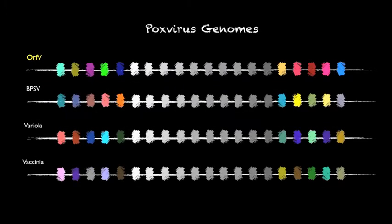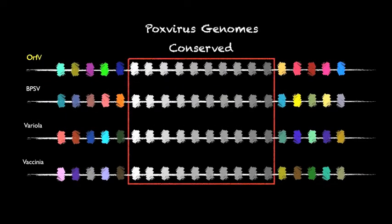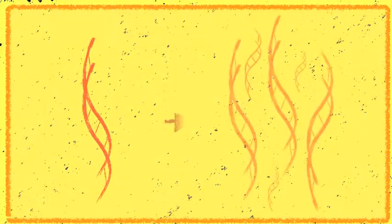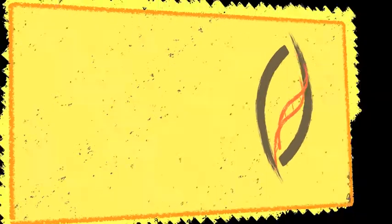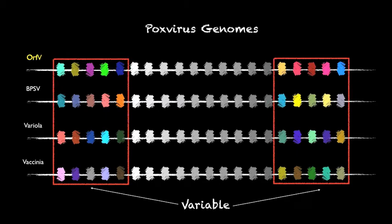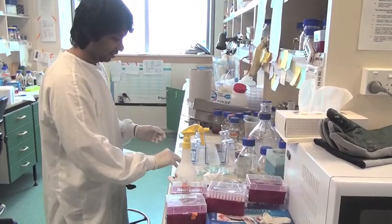The double-stranded DNA genomes of pox viruses can be separated into two portions: a central core containing highly conserved genes linked to common virus infection steps, such as genome replication, packaging and exporting, and flanking regions containing variable genes often associated with host specificity, virulence and immune modulation.